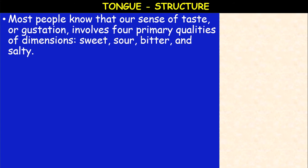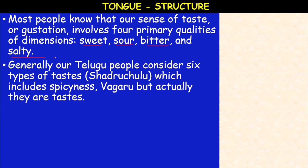Most people know that our sense of taste — also called gustation — involves four primary qualities or dimensions. The four primary tastes are: sweet, sour, bitter, and salty. Generally, our Telugu people consider six types of tastes called Shadruchulu — that is what we call Ugadi Pachadi, which includes even spiciness.